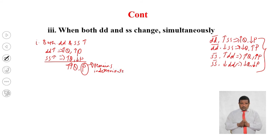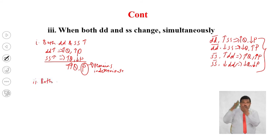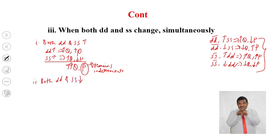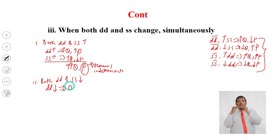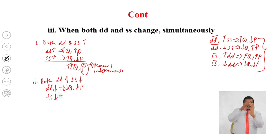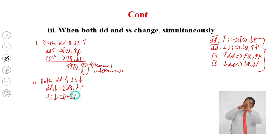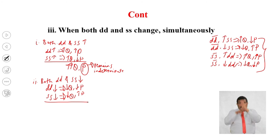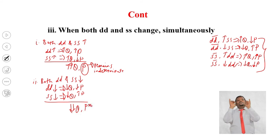Second, when both demand and supply decrease simultaneously, the equilibrium quantity will decline — when demand decreases the quantity declines, and when supply decreases the quantity also declines. But when demand decreases the price declines, while when supply decreases the price increases. So the equilibrium price remains indeterminate.